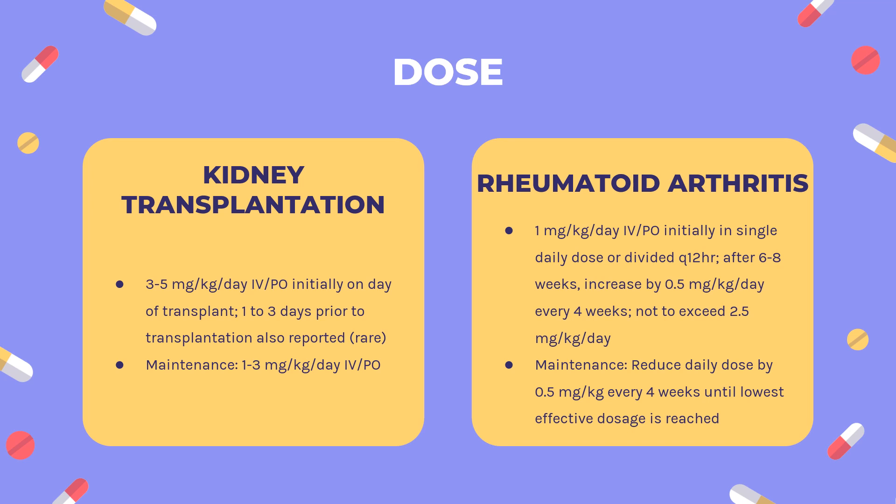Ulcerative colitis (off-label): Maintenance or reduction of steroid — 1.5–2.5 mg/kg orally once daily. Chronic refractory thrombocytopenic purpura (off-label): 1–2 mg/kg orally once daily, to a maximum daily dose of 150 mg, for at least 3 months before a typical response is observed.